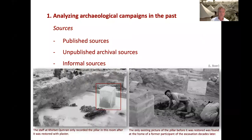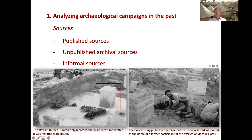I have here an example of a picture taken at the excavation of Khirbet Qumran near the Dead Sea. In the middle there is a pillar just excavated and exposed, and they didn't record or document the original state of this pillar. They just restored it with plaster, as you can see. So the original height or the original shape of the pillar was not visible anymore. When later scholars were studying the situation, they thought it was a pity they didn't have good documentation of the original state of the pillar. And decades later I found at the home of a former participant of this expedition what I think is the only original photo made before the restorations, so you can see the original shape. It gives new information about the excavation in the past.